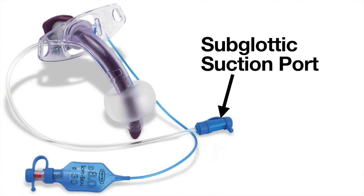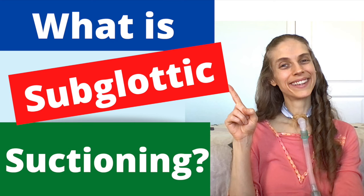On some tracheostomy tubes, there is a special line which extends from the exterior of the tracheostomy tube. It is called a subglottic suction port. This is used to perform a special kind of suction called subglottic suctioning. For more details about subglottic suction, please see the video "What is subglottic suctioning?"